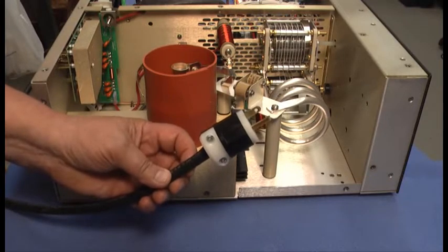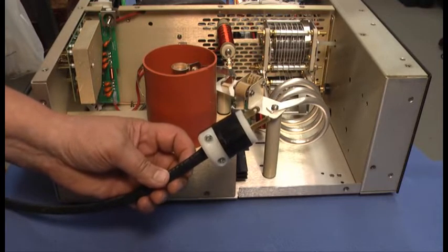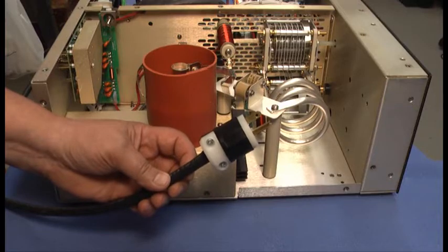First of all, always disconnect the AC line cord from the power source before removing the top cover of the amplifier for any reason.